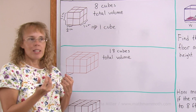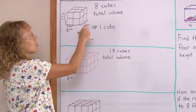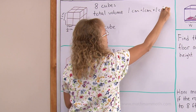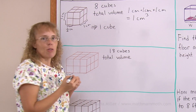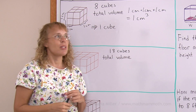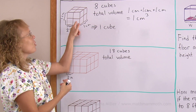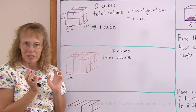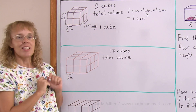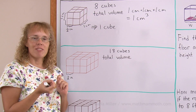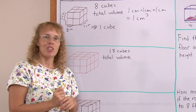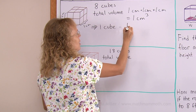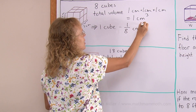The total volume we can calculate by one centimetre times one centimetre times one centimetre, so the whole volume is one cubic centimetre. Now, what about one cube here? How much is its volume? If the whole thing is one cubic centimetre and there are eight cubes, then each little cube has the volume of one-eighth of a cubic centimetre.